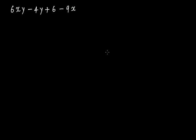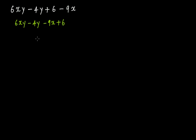Let's end this discussion by solving one last problem: 6xy minus 4y plus 6 minus 9x. Can you find one factor that is common in all these terms? No. So we can use regrouping. Let's write it as 6xy minus 4y, and then minus 9x plus 6. Regrouping requires a lot of practice — you have to practice, practice, practice, and then you can quickly figure out how to regroup the terms. So we have 6xy minus 4y minus 9x plus 6.